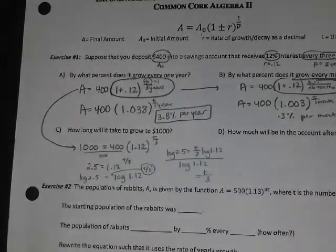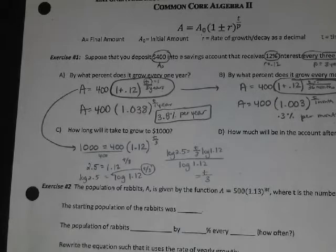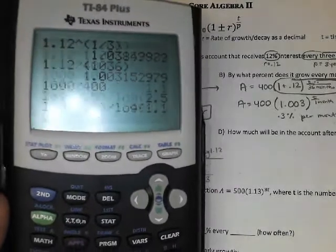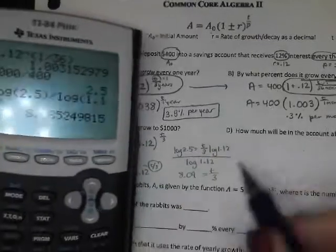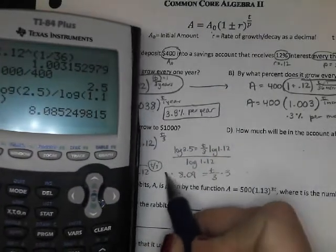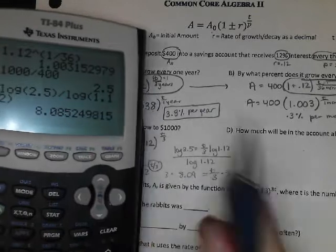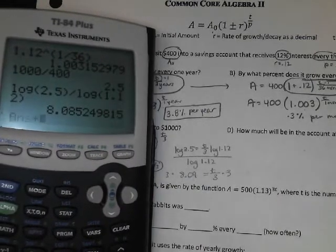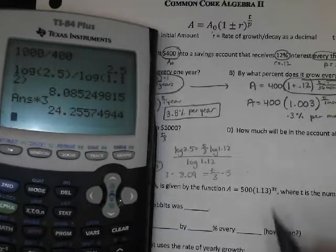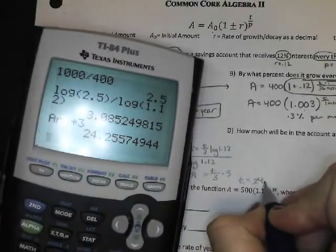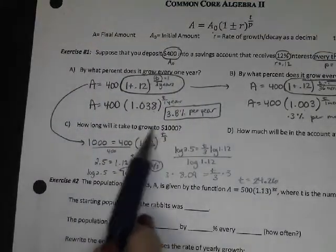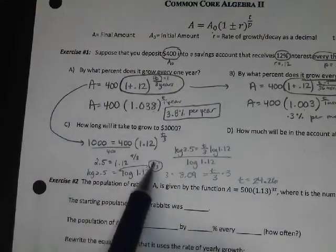We're going to divide the log of 1.12 over. So T over 3 will equal the log of 2.5 on my calculator divided by the log of 1.12 on my calculator. Log of 2.5 gives me crazy decimal. I'll do 8.09. But when I go to multiply both sides by 3, I'm not tripling 8.09. I'm going to triple that exact number. So T will equal 24.26.